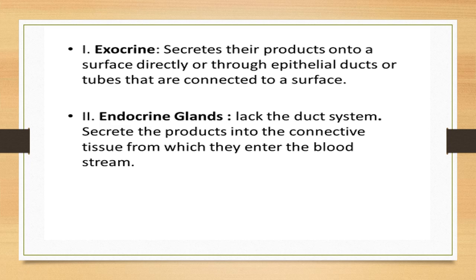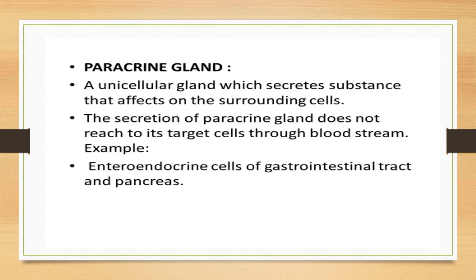Examples of endocrine glands include the thyroid gland, the ovarian glands, the suprarenal glands, and the pituitary gland — all secreting their products into the bloodstream to reach distant areas. Paracrine glands are unicellular glands that secrete substances affecting surrounding cells. Their secretions do not reach target cells via the bloodstream; instead they diffuse into surrounding tissue to affect nearby cells. Examples include the enteroendocrine cells of the gastrointestinal tract and the pancreas.